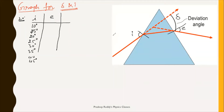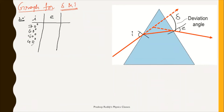Using a protractor, you measure the angle of incidence. You can start from 10 degrees increasing upward, or start from 70 degrees and decrease to 60, 50, 40, 30, 20, and finally 10 degrees. For each different angle of incidence you will get a different angle of emergence e, and we have the relation delta equals i plus e minus (r1 plus r2).